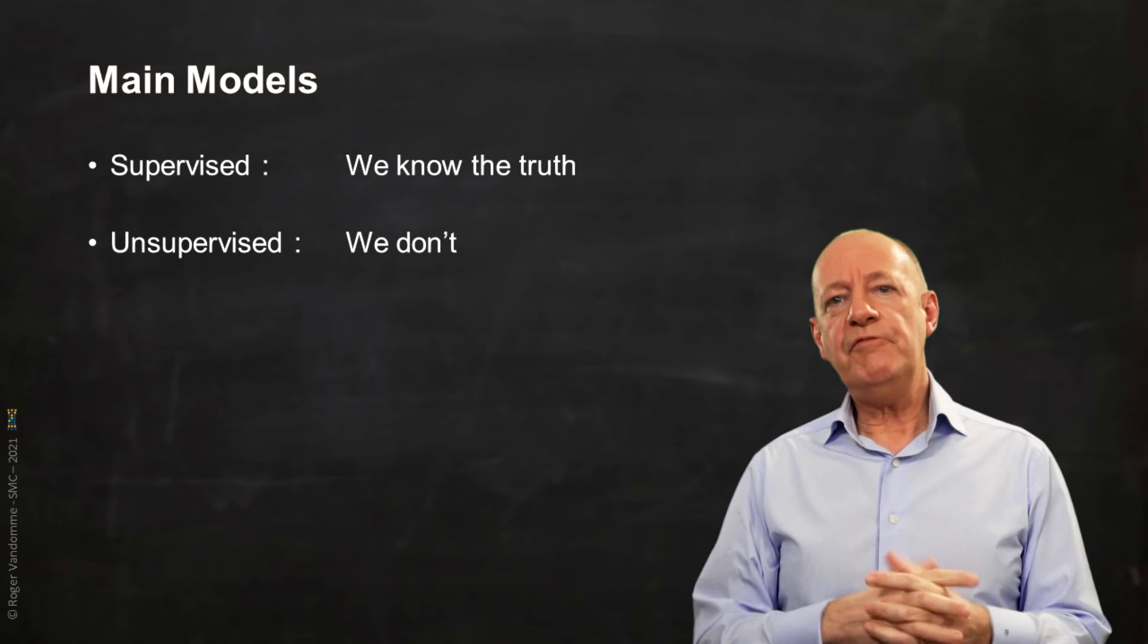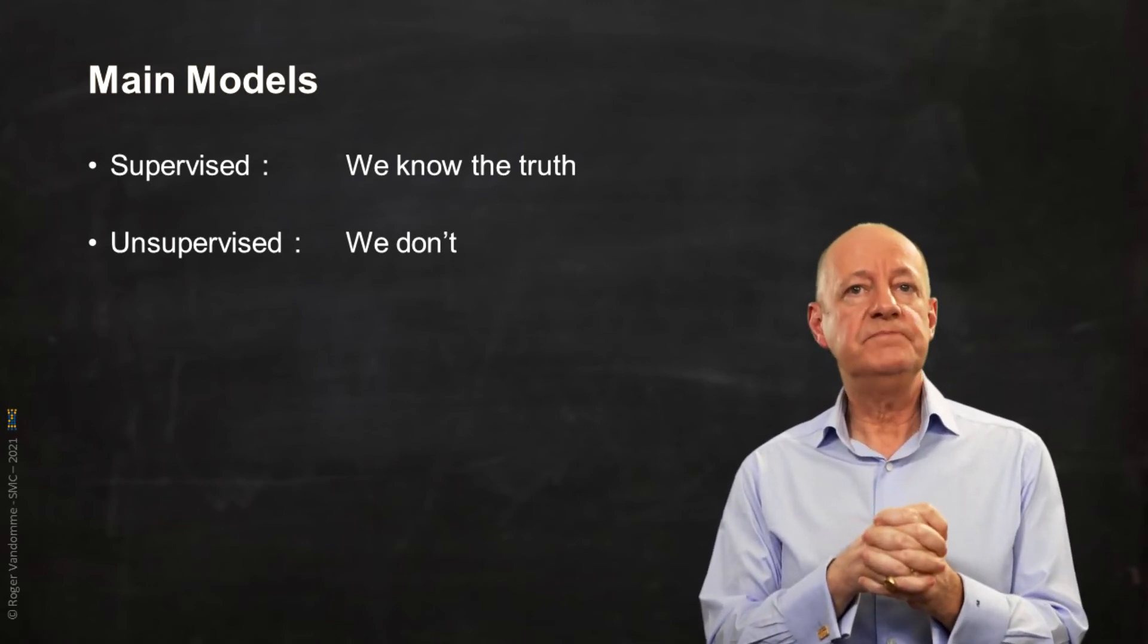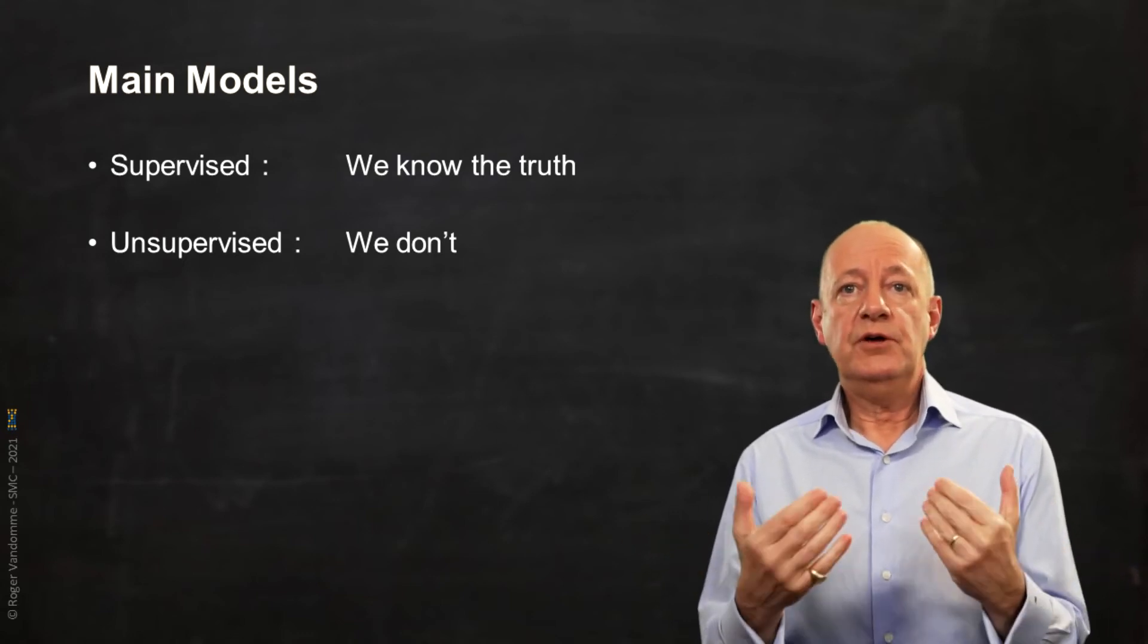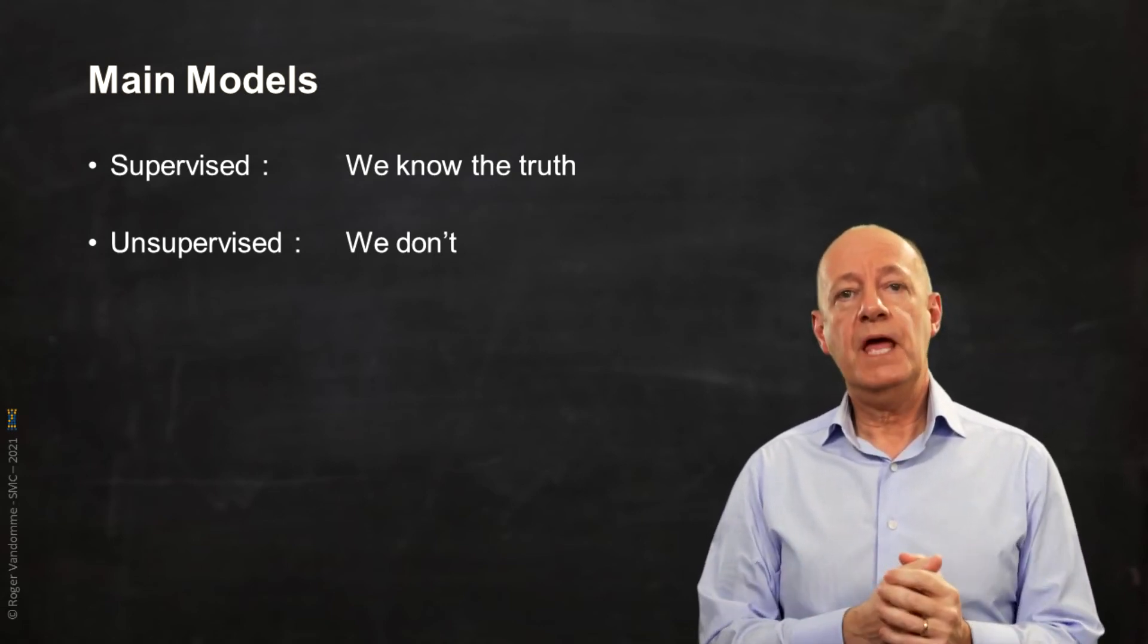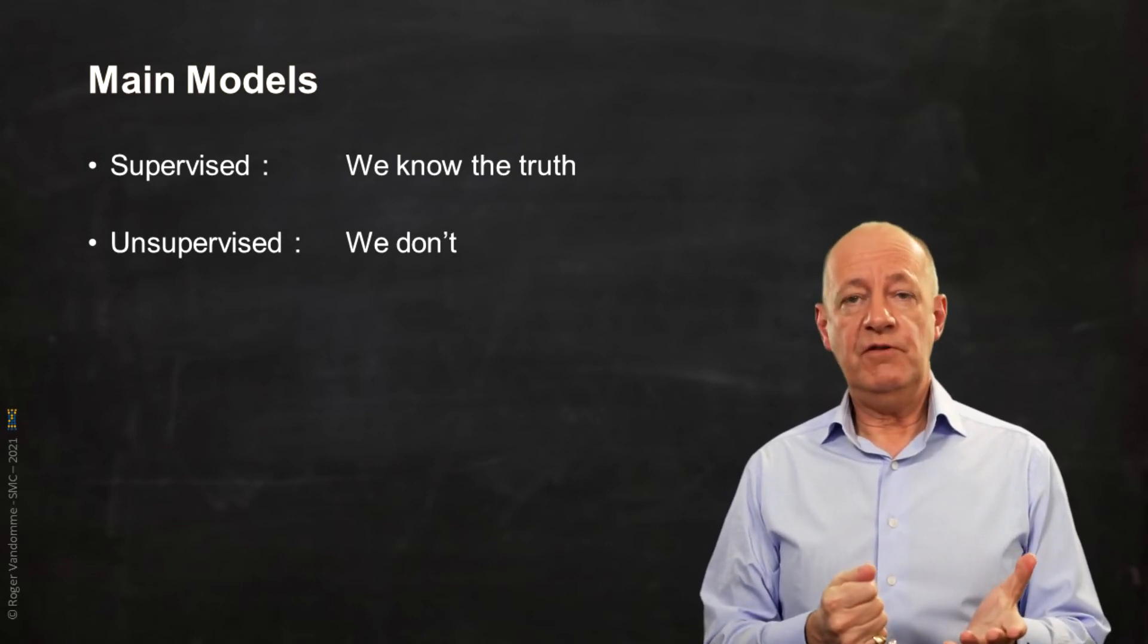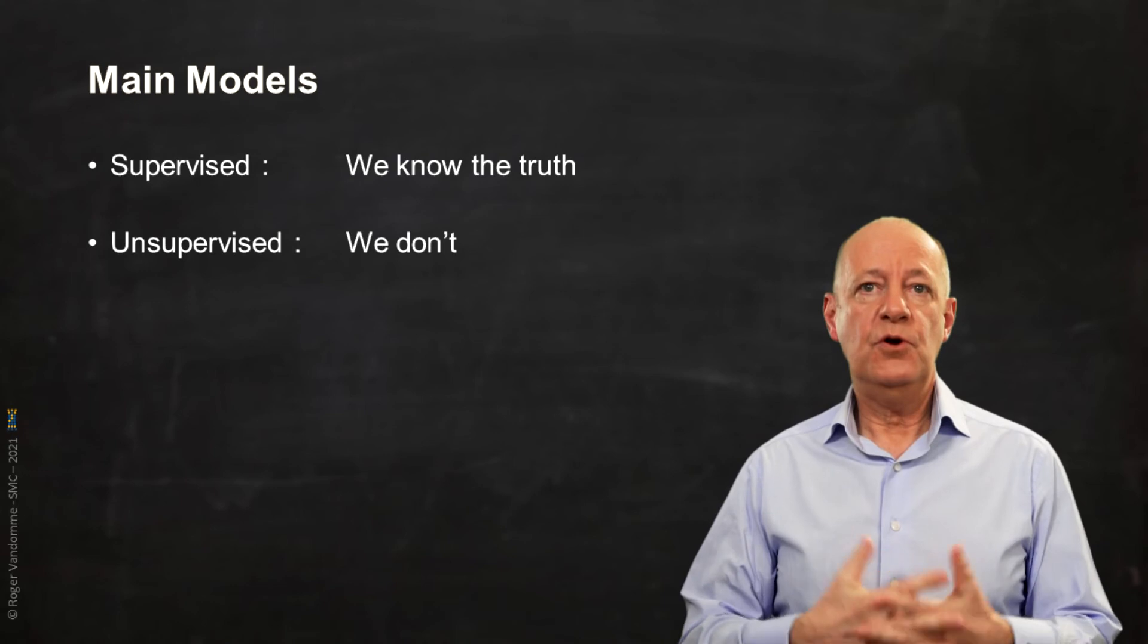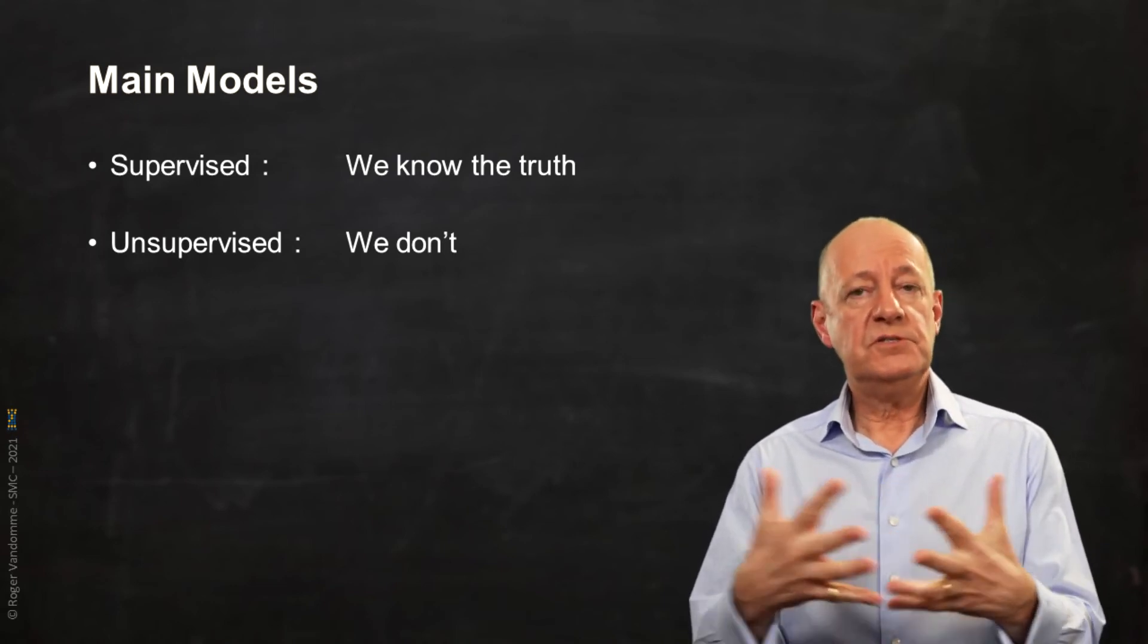A question often asked is how do we know if the model is valid? In the case of a supervised model, this is quite simple since we have a learning reference. The prediction can therefore be compared with the observed reality once it has occurred. But in the case of an unsupervised model and in the absence of learning references, only the end user will be able to decide whether the model is valid or not, whether the segments are valid and usable based on their own experience and references.